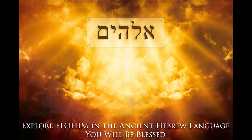Lamed is also the number 30. 30 is the blood of Christ, dedication. 3 times 10 is 30. 3 is divine perfection, 10 is ordinal perfection. The meaning is magnified perfection of a divine order marking the right moment. And in summary, it's a blood sacrifice.